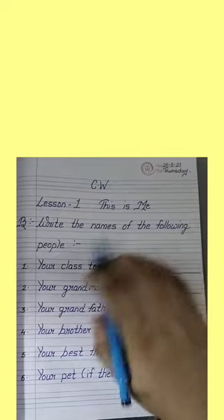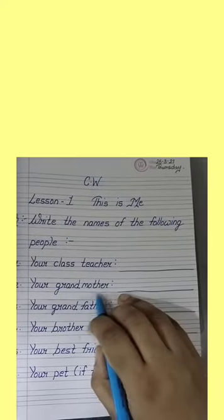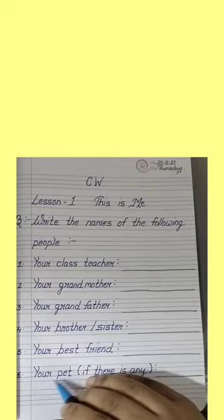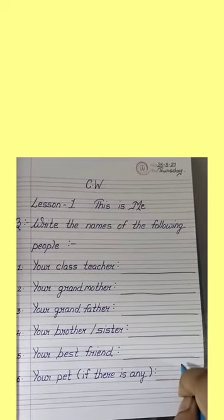So this is your fourth exercise: write the names of the following people — your class teacher, grandmother, grandfather, brother or sister, best friend, and pet name. Complete exercise four for lesson number one with beautiful handwriting and send it to your WhatsApp group. Some students need to improve their handwriting — it is very untidy, so please be careful and practice your handwriting.